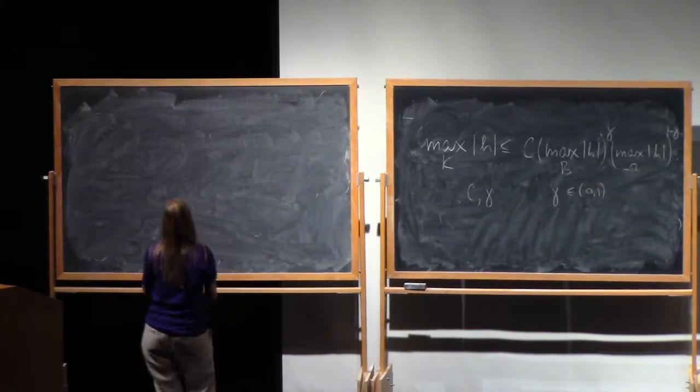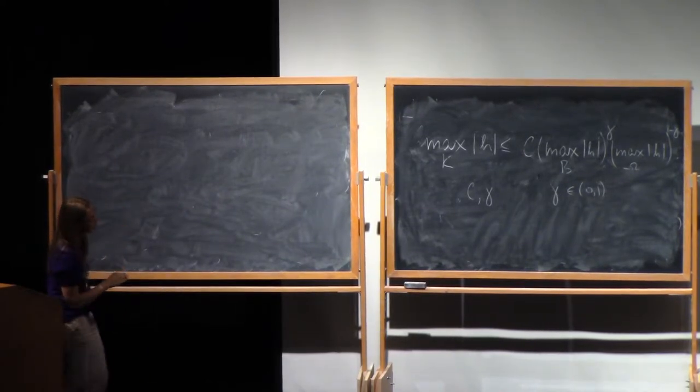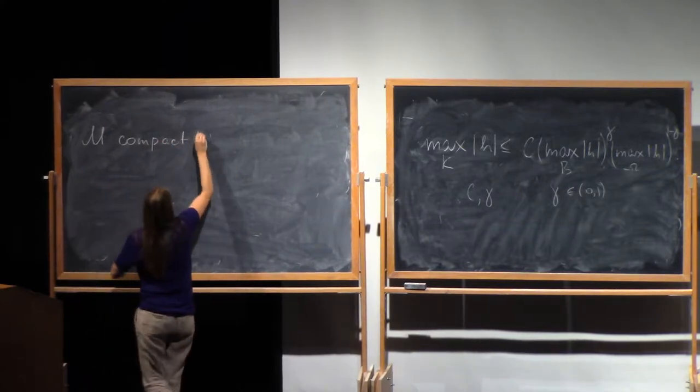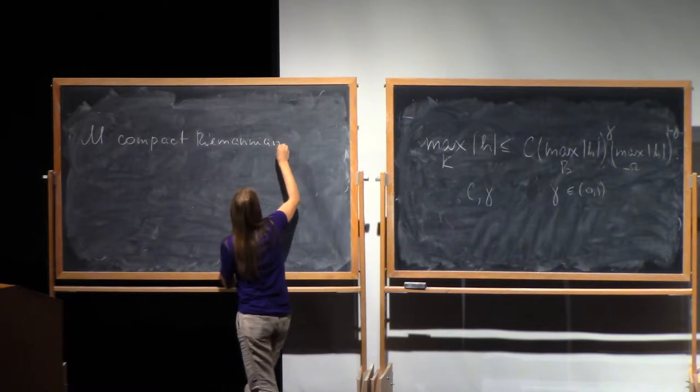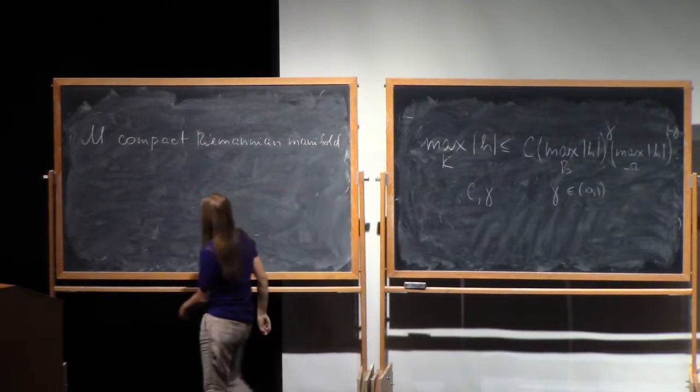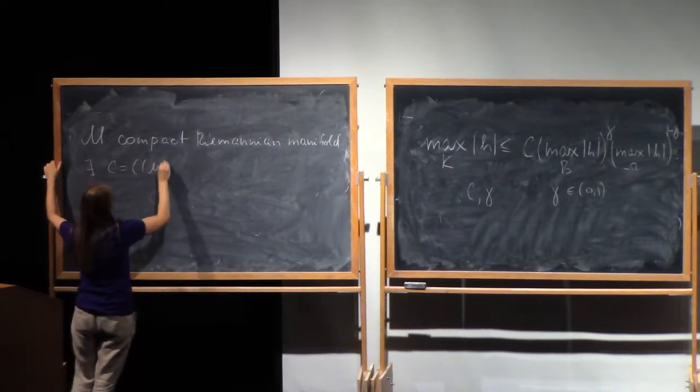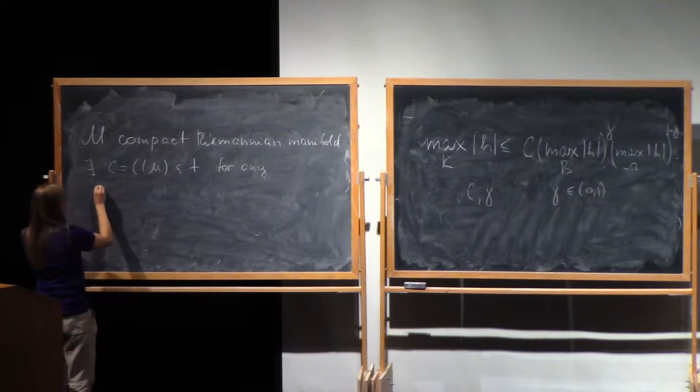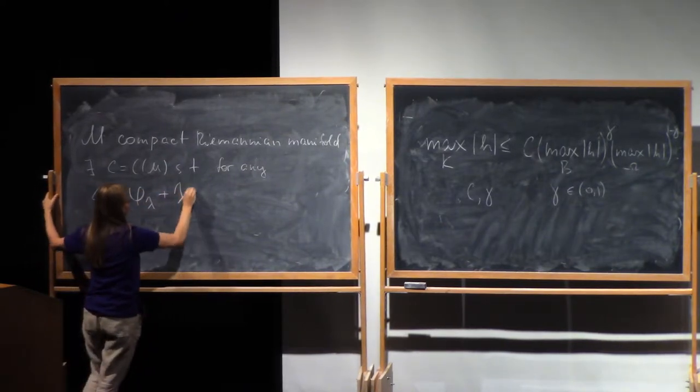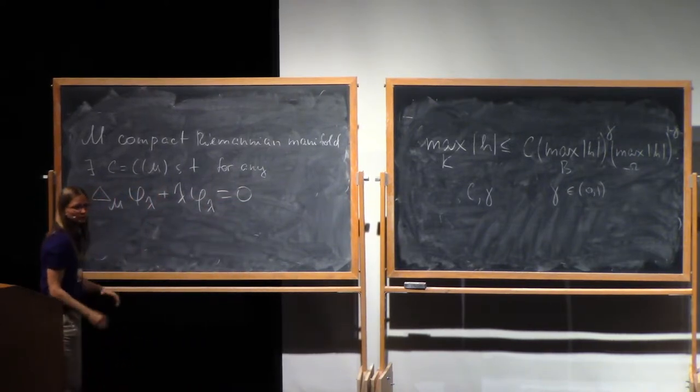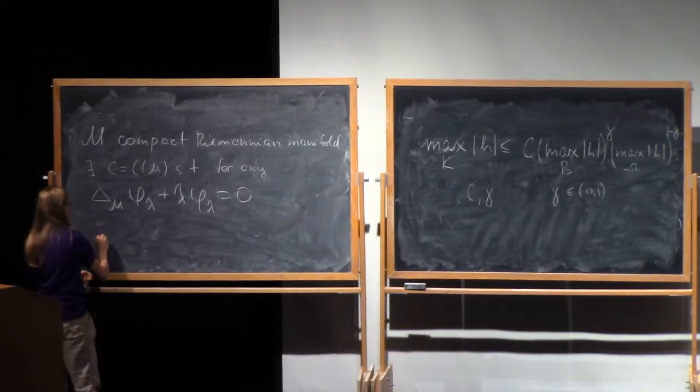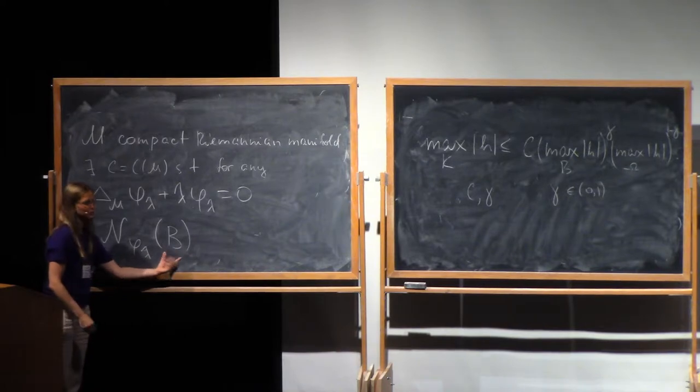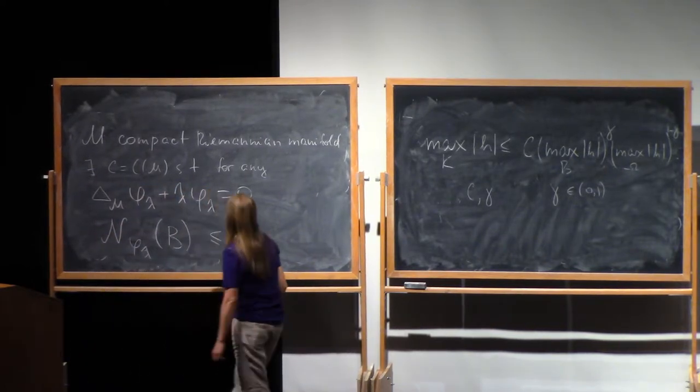So we'll prefer to work with the doubling index. And now I can formulate the claim that is one of the main results for today. Say we are on a compact manifold. We say that there is a constant depending on m such that for any eigenfunction and any relatively small ball, the doubling index of the eigenfunction related to this ball is bounded by constant times square root of lambda.